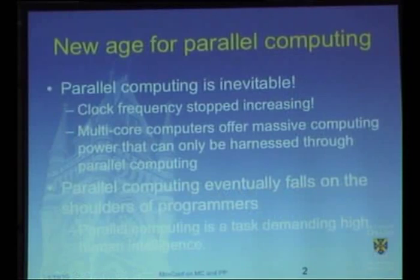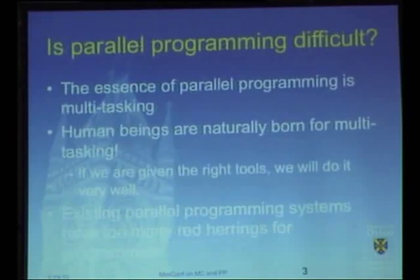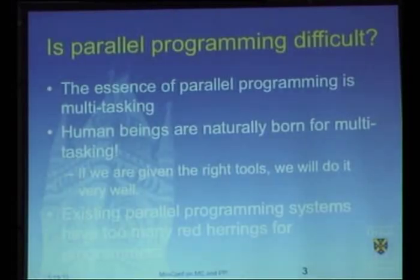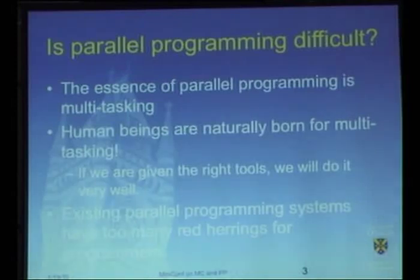We all know we need to do parallel programming — it's inevitable given the memory wall and the power problem. The essence of parallel computing is a kind of multitasking. Human beings are natural multitasking performers; we can do parallel cooking using multiple stoves at the same time. In principle we should be used to it, but why does parallel programming seem so difficult in reality? I'm trying to address that fundamental difficulty.